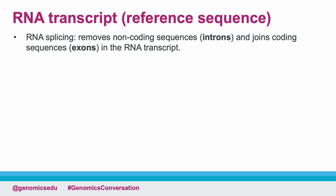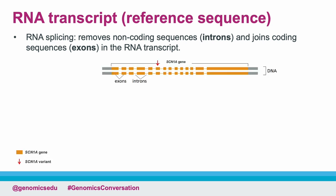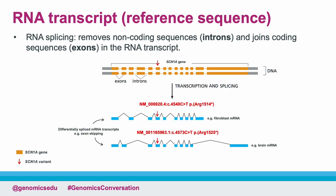First, we will expand on the concept of transcripts. Let's start with RNA splicing — a process that removes the non-coding sequences, known as introns, and joins the coding sequences, known as exons, in the RNA transcript. On the image of the SCN1A gene here, the exons are shown in dark orange bars, interrupted by the introns shown as dark orange lines between the exons. Alternative RNA splicing produces different combinations of exons to either be included or skipped from the final RNA transcript, resulting in differences in sequences and lengths between different transcripts. This is a mechanism that enables a single gene to code for multiple proteins, allowing, for example, tissue-specific gene expression.